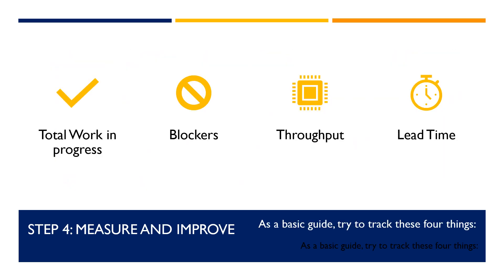Kanban is a system of continuous improvement and evolution towards greater efficiency and output. However, the only way to achieve this continuous improvement is to constantly measure how it is going and adjust accordingly. As a basic guide, try to track these four things: total work in progress, blockers, throughput, and lead time.